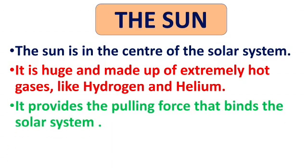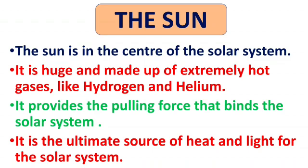Do you ever wonder why the planets do not go off their path? Because the sun provides the pulling force that binds the solar system. It is the ultimate source of heat and light for the solar system.